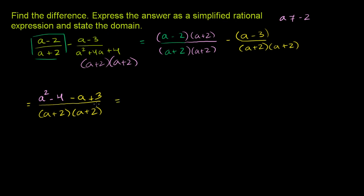So what does this simplify to? You have a squared minus a plus, let's see, negative 4 plus 3 is negative 1. And then all of that over a plus 2 times a plus 2. Or we could just rewrite that as a plus 2 squared.